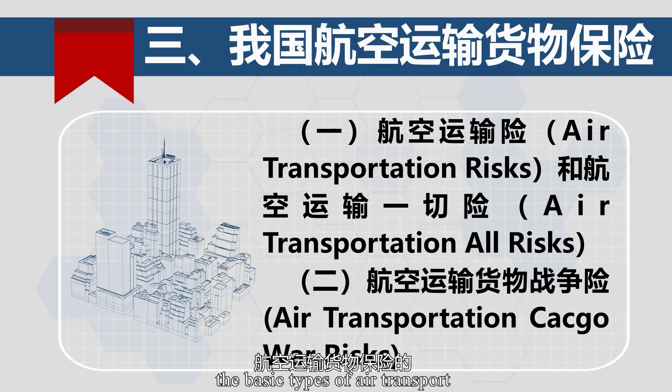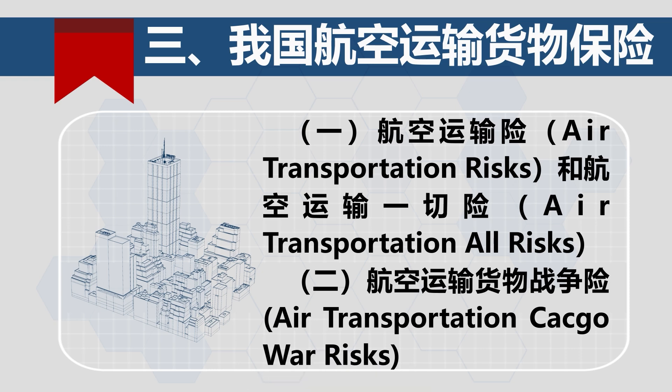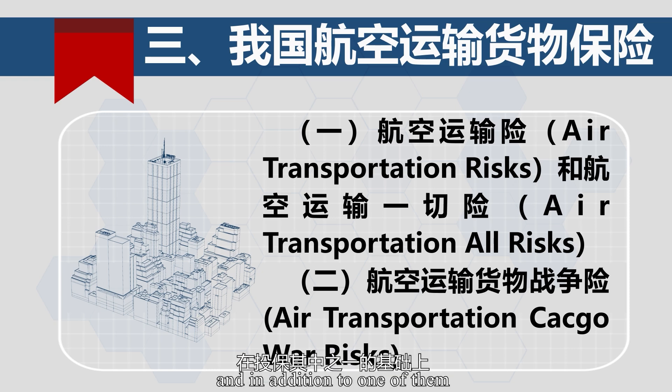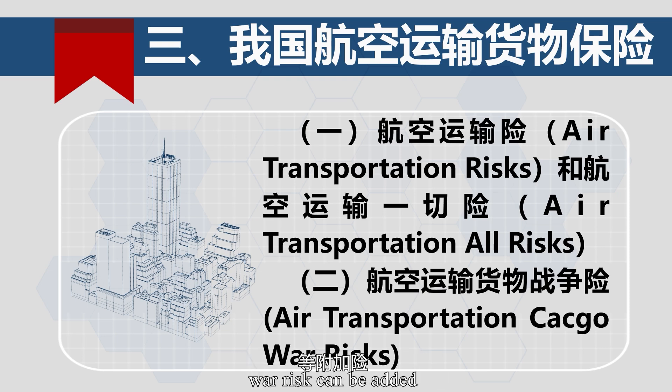According to the provisions of China's air transport cargo insurance clauses, the basic types of air transport cargo insurance are divided into air transport insurance and air transport all-risk insurance. Both of these basic insurances can be insured separately, and in addition to one of them, additional insurances such as war risk can be added.